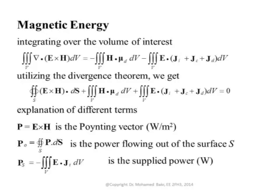Every term here has a meaning. E×H — as I explained in one of the lectures, in electromagnetic waves E and H are normal to one another, and the direction normal to both is the direction of wave propagation. E is in volts per meter, H is in amperes per meter, so this quantity has units of watts per meter squared. It's a power density vector — we call it the Poynting vector. Its direction is the direction of wave propagation. When you integrate this over the surface, it gives you the power leaving the surface.